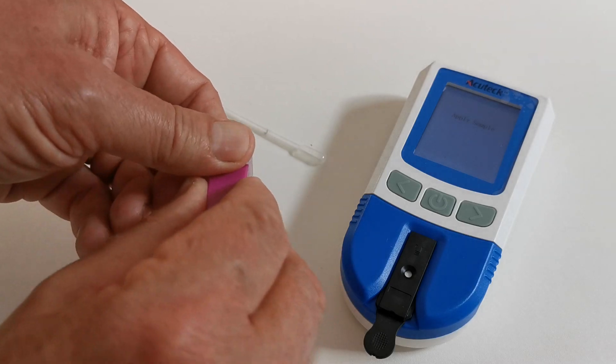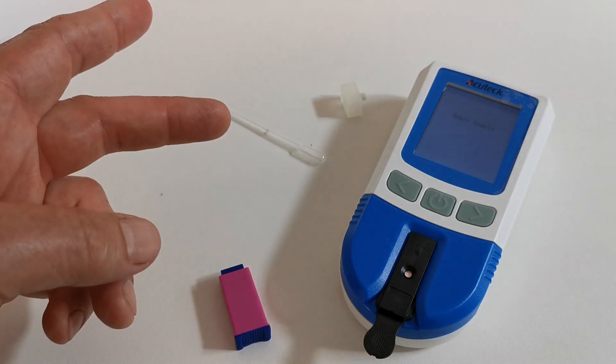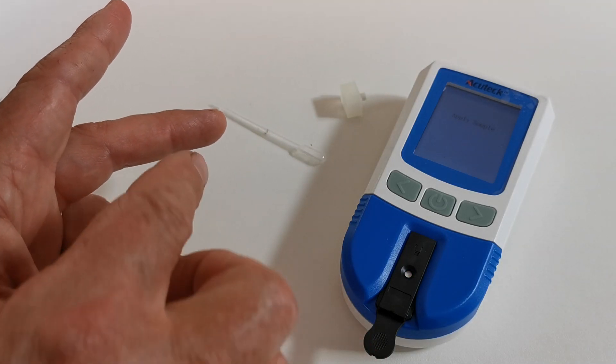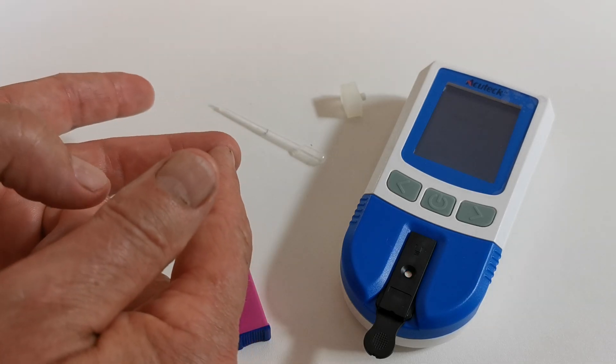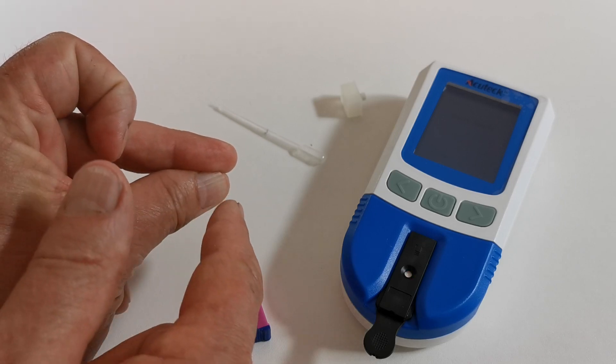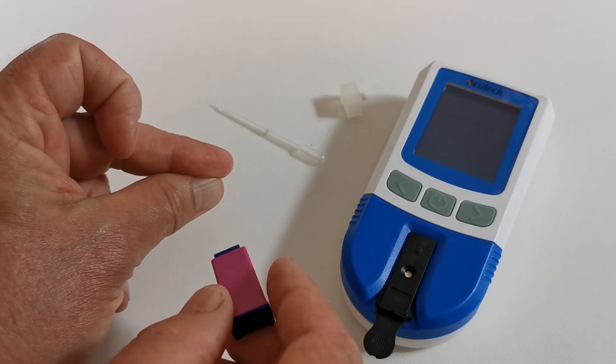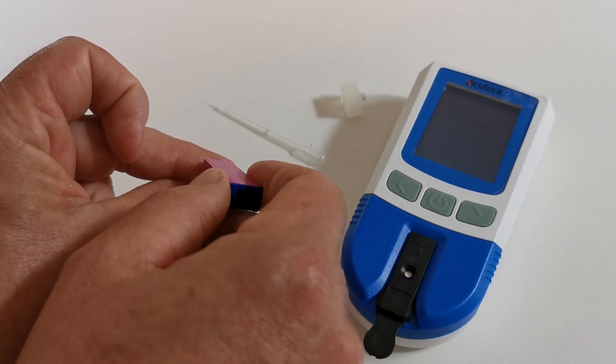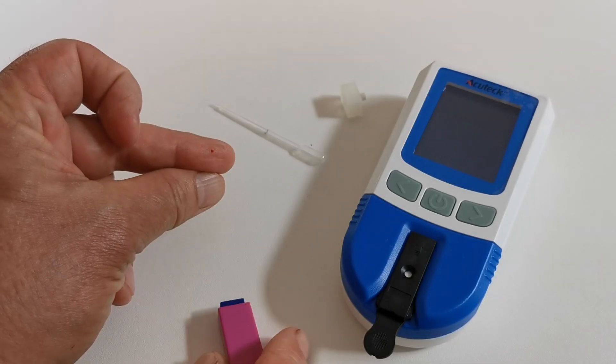When you're ready to do so, remove the cover from the lancing device. Select the area you're going to lance. We always recommend the side of the finger as opposed to the base. Support the finger underneath. My favorite technique is using the thumb just to pull the tissues around and forward. And then with a firm action, trigger your lance.